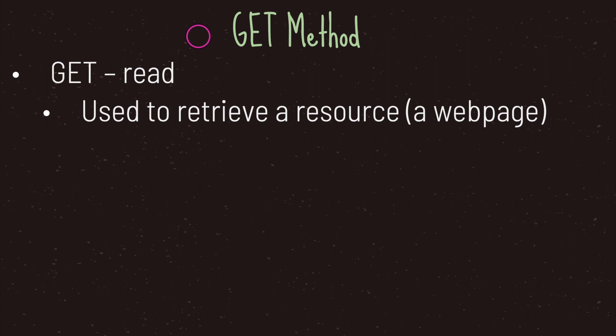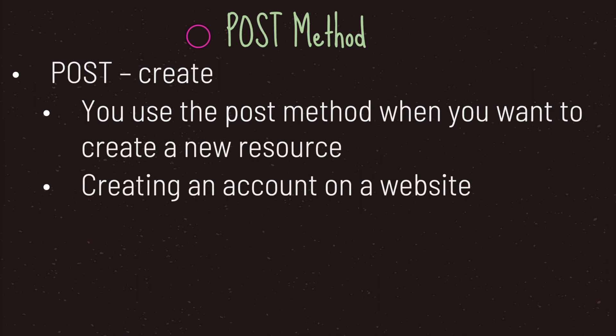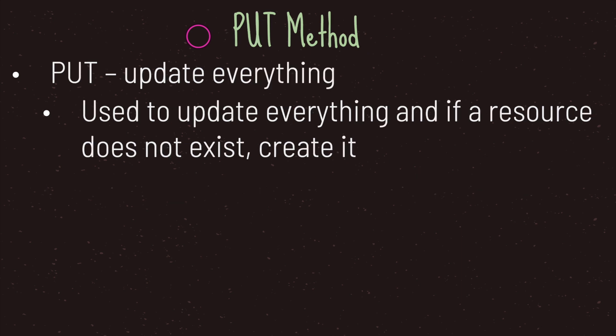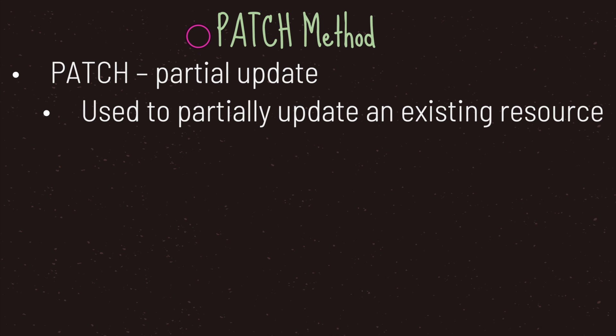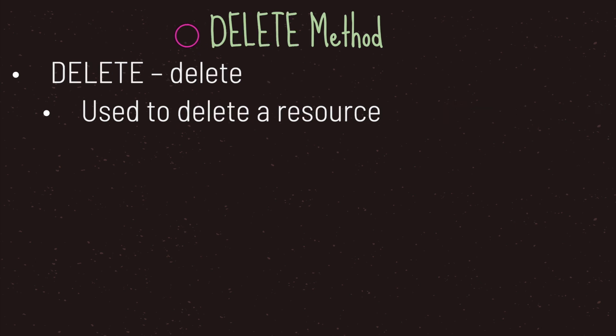Let's run through all the methods. The GET method is used to retrieve a resource — this would be something like a web page. The POST method is used to create a resource; think of this as creating a username and password for a web application. The PUT method is used to update everything, and if that resource does not exist, create it. The PATCH method is used when you want to partially update an existing resource. And lastly, the DELETE method is used when you want to delete a resource.